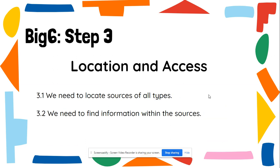Step three is location and access. Now that I have the type of sources and know what I'm going to be researching, I know what sources I need and what information I need for this research. Now we need to locate all the sources we're going to be getting this information from, and we need to find the information within those sources.